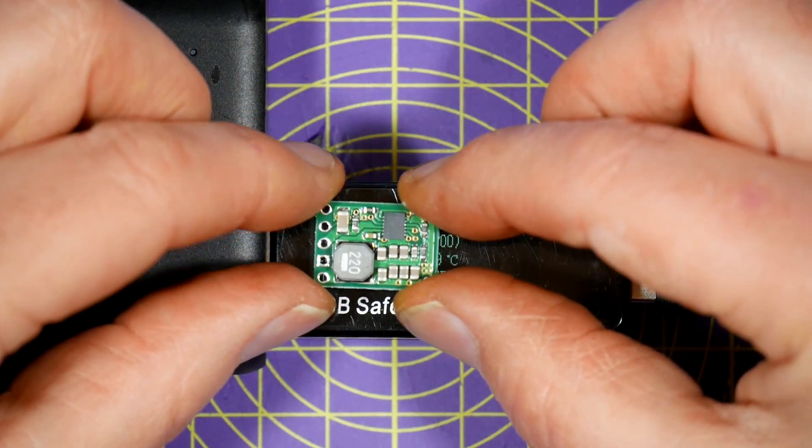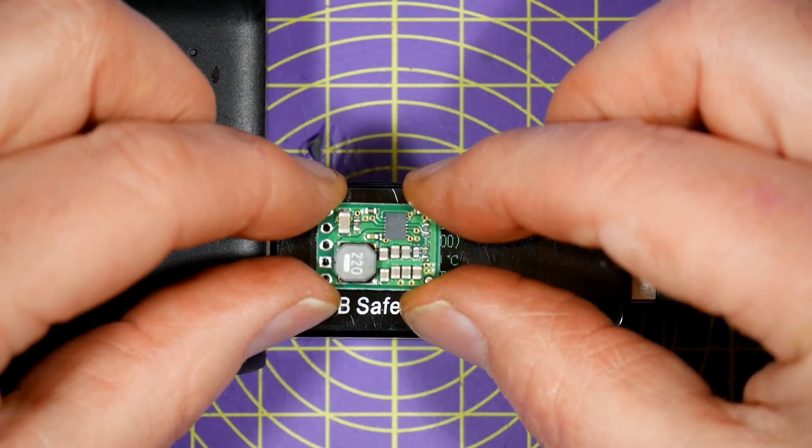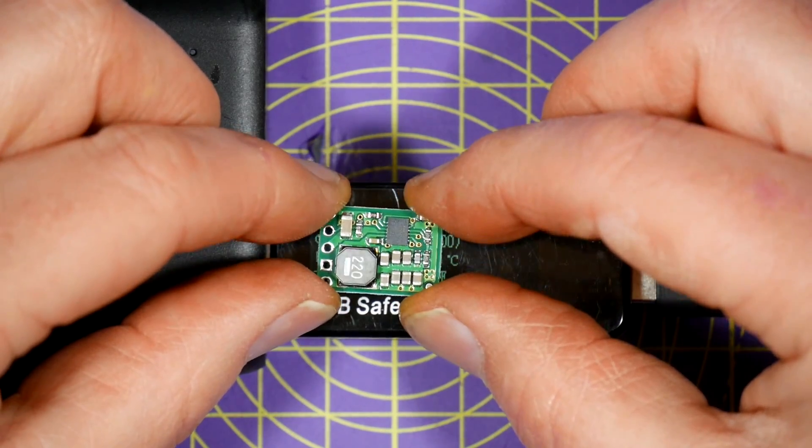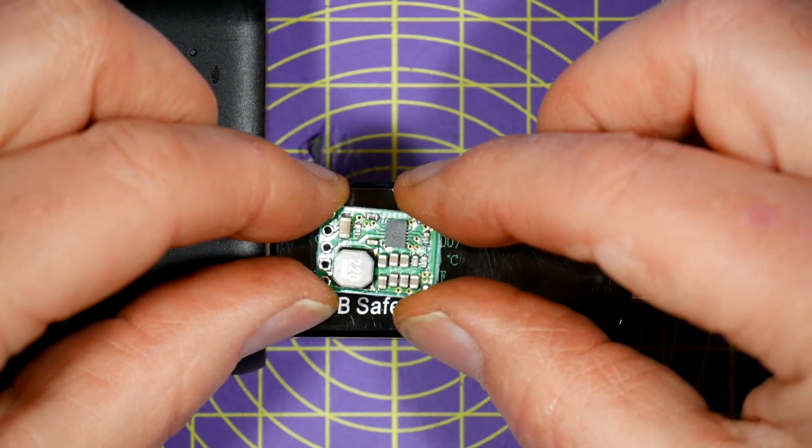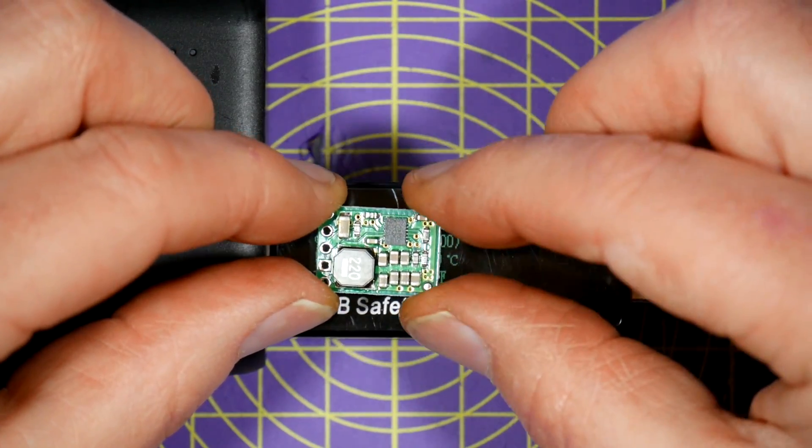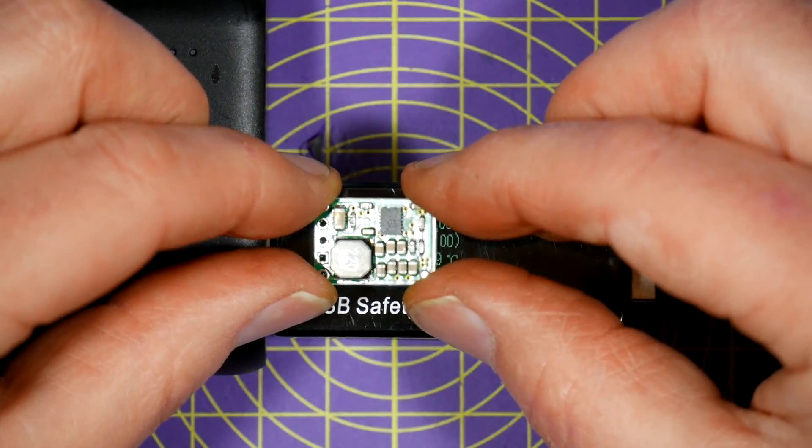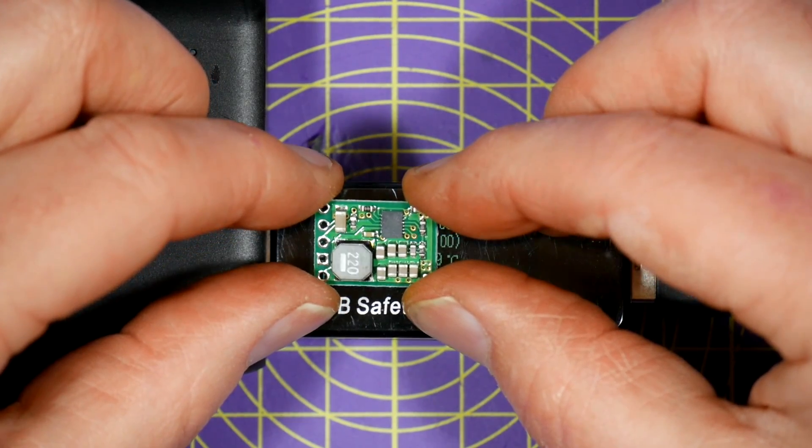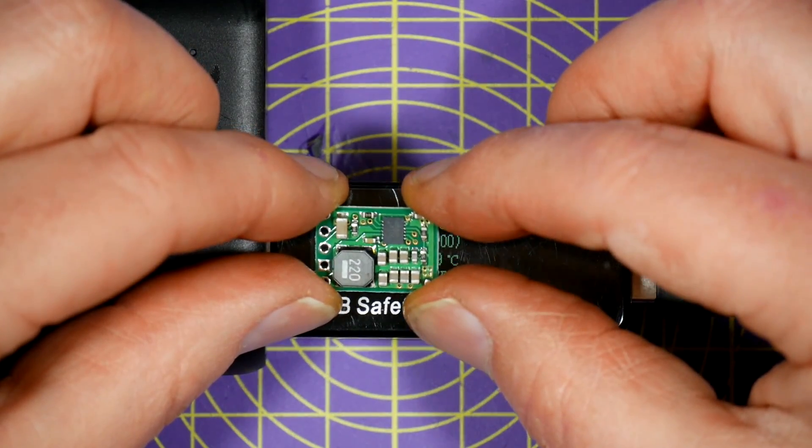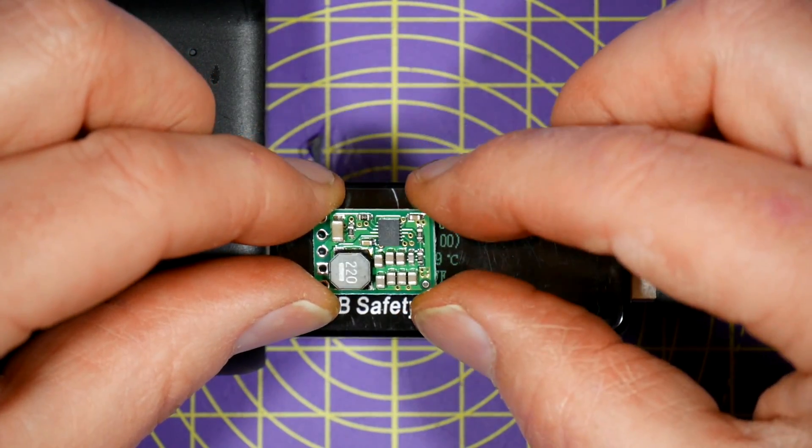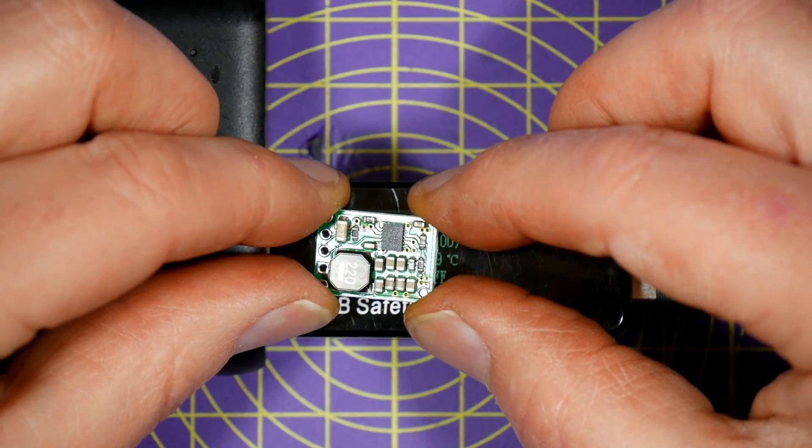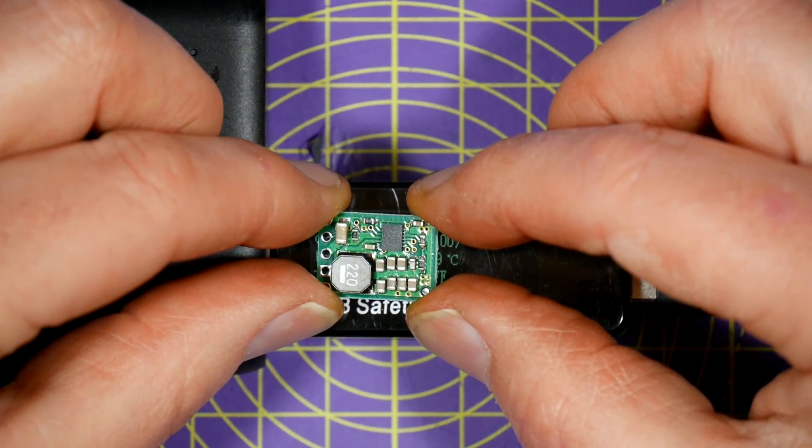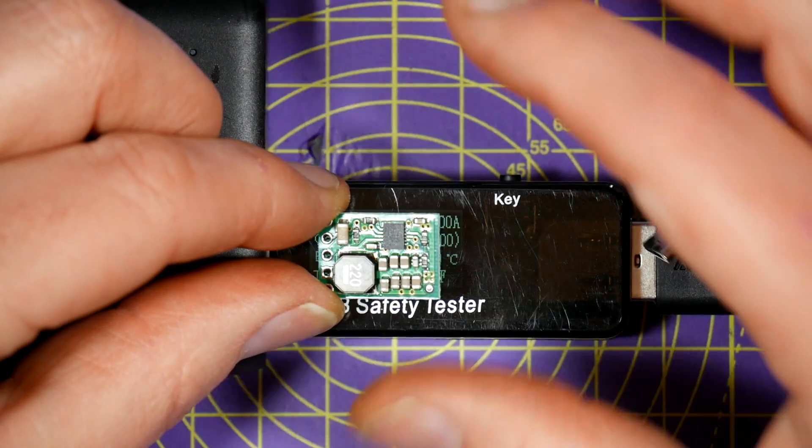So the easiest thing to do is to use a switching regulator like this Pololu that's rated at 1 amp continuous. It'll take anywhere between 5.5 and 50 volts in, which is plenty, and we get 5 volts out. So that should be beefy enough. And the reason we use a switching regulator is because it's more efficient than a linear regulator, so it doesn't generate as much wasted power and gets nowhere near as hot.